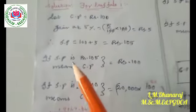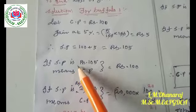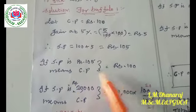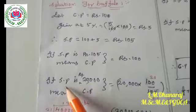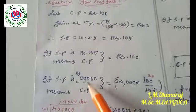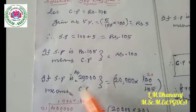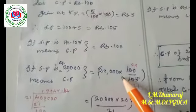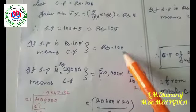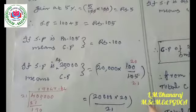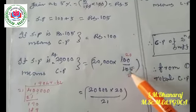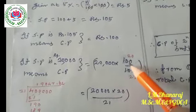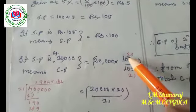If the selling price is rupees 105, the cost price is rupees 100. If the selling price of the buffalo is rupees 20,000, then the cost price is equal to 20,000 into 100 divided by 105. By the 5 times table we can cancel — two 5s make 10, this is 1 time and this is 20 times.